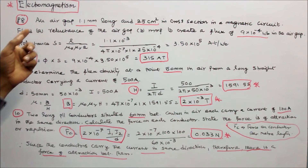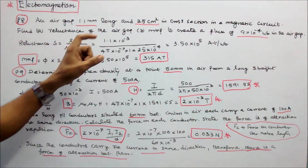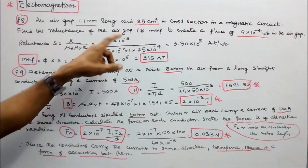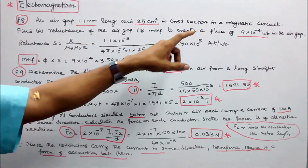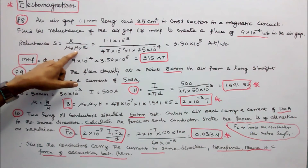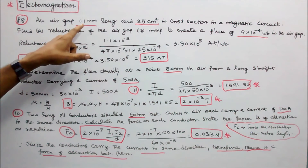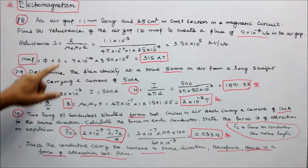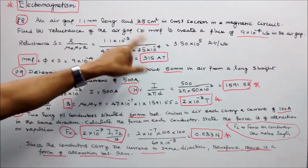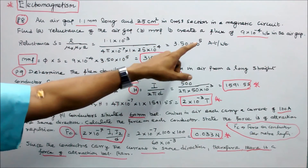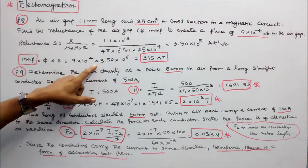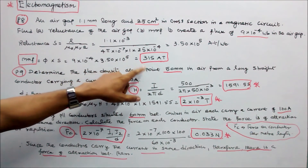Problem number 8. An air gap 1.1 mm long and 25 cm square in cross section in a magnetic circuit. Find (A) reluctance of the air gap, and (B) MMF to create a flux of 9 into 10 power minus 4 Webers. Reluctance S equals L divided by mu0 into muR into A. L equals 1.1 into 10 power minus 3, mu0 equals 4π into 10 power minus 7, muR equals 1, A equals 25 into 10 power minus 4. S equals 3.50 into 10 power 5 ampere turns per Weber. MMF equals Φ into S: 9 into 10 power minus 4 into 3.50 into 10 power 5 equals 315 ampere turns.